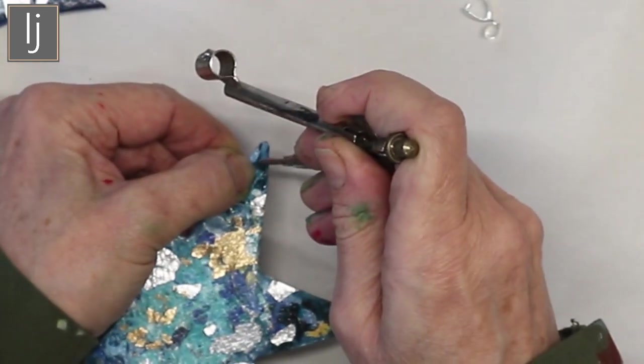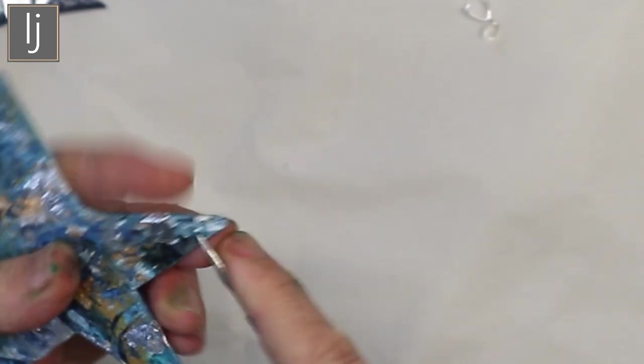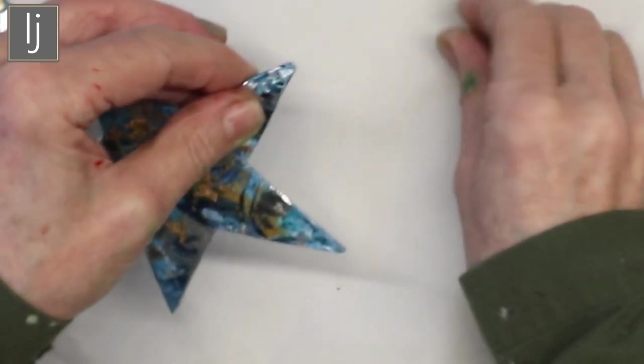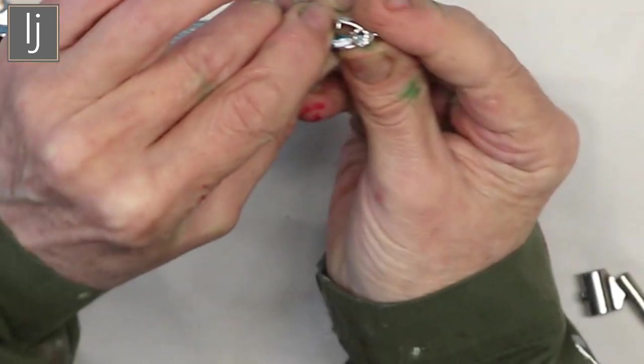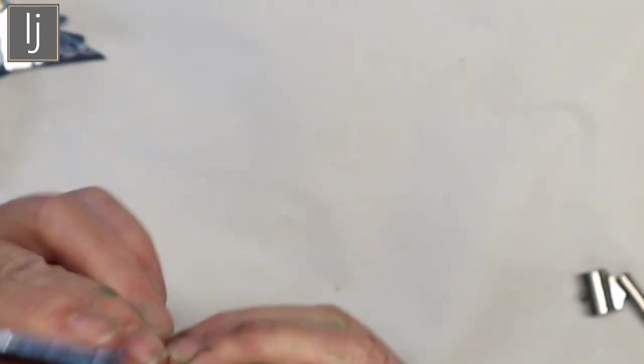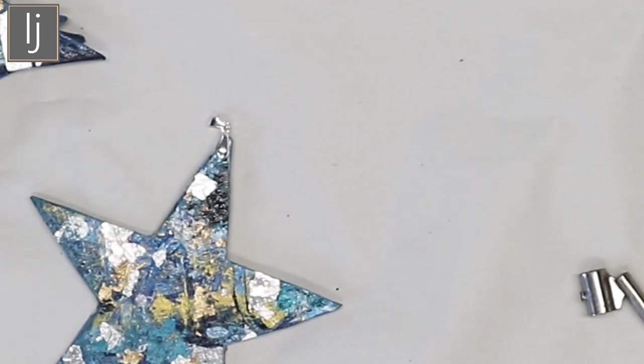Then make a hole through. It goes through real easily actually. I've made a hole through it and then all you have to do is put the finding in, the pendant bale. Put the little pins into the holes, and there you go. It's lovely. Finish it off with a little ribbon.